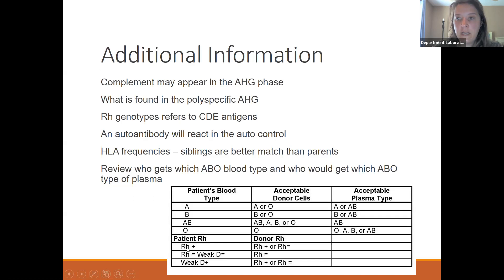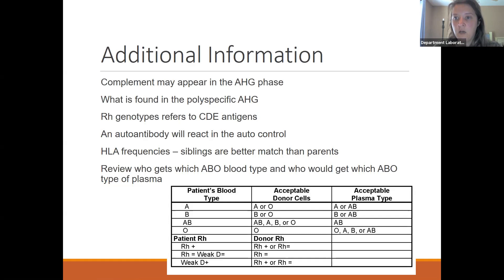An RH positive patient can receive RH positive or RH negative products. If your patient is RH negative, they should only receive RH negative products to prevent alloimmunization to anti-D. However, in trauma situations or for patients using a large volume of products who are male, we will switch them over to RH positive to conserve our RH negatives. You never want to do that for a female who is within childbearing age — that will cause her to build anti-D. As we have seen in evaluating hemolytic disease of the newborn, anti-D could be fatal to the fetus.